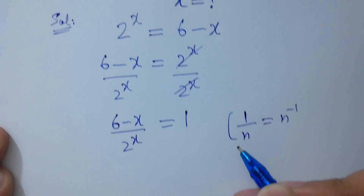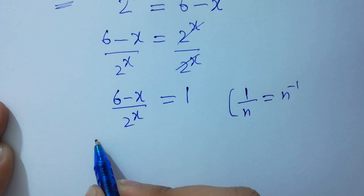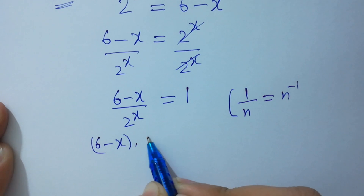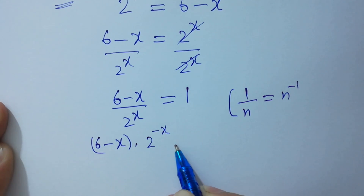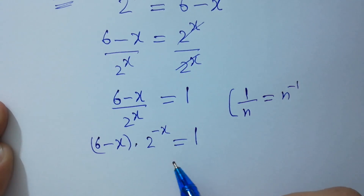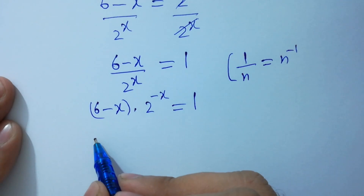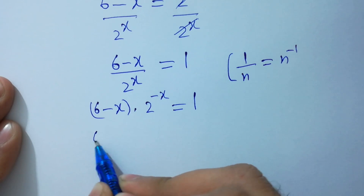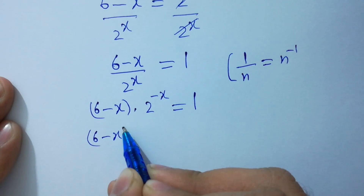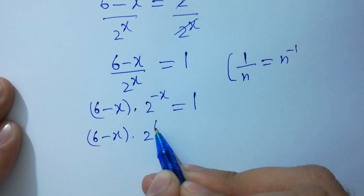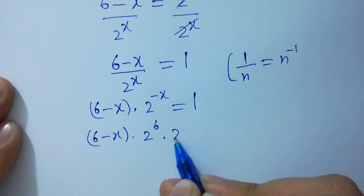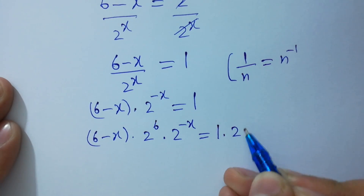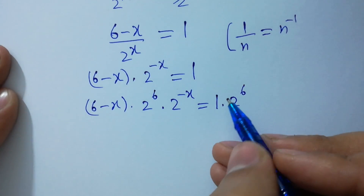it becomes 6 minus x times 2 to the power minus x equals 1. Multiplying by 2 to the power 6 on both sides gives 6 minus x times 2 to the power 6 times 2 to the power minus x equals 2 to the power 6.